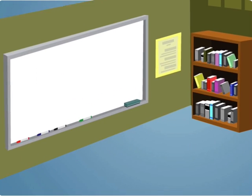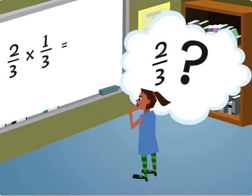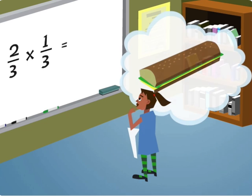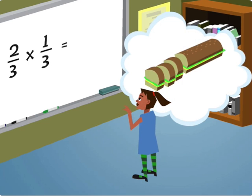Another mistake can occur when students take what they've learned about addition of fractions and apply it to multiplication. Pictorial representations can help students see the meaning of two-thirds of one-third.